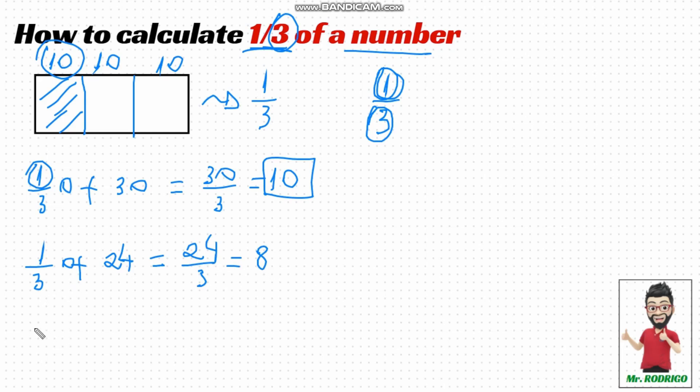What is one-third of 18? You're going to take the number 18 and divide, or split it, into three equal parts. 18 divided by 3 equals 6. So, one-third of 18 is 6.